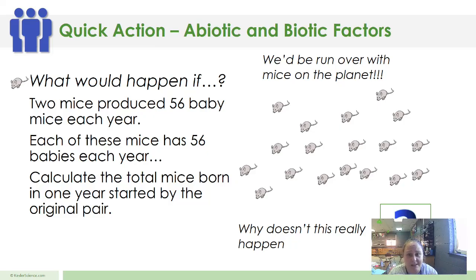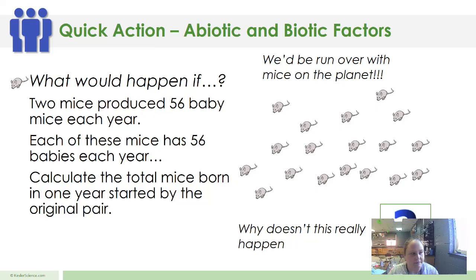We'd be run over with mice on the planet — and why doesn't this really happen? This doesn't really happen because there's survival of the fittest. If the mouse is weak and can't compete with other mice for food, it dies out. Some mice have reproduction problems so they do not produce offspring. Some migrate, so they don't live in the same area — they migrate to find food or mates. So there are different factors that play into preventing animals, plants, or living things from becoming overpopulated in an area.